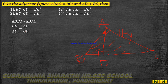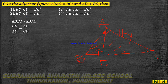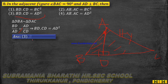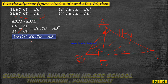So BD by AD equals AD by DC. In these adjacent figures, therefore BD multiplied by CD equals AD squared. Option 3 is the correct answer: BD into CD equals AD squared. Thank you.